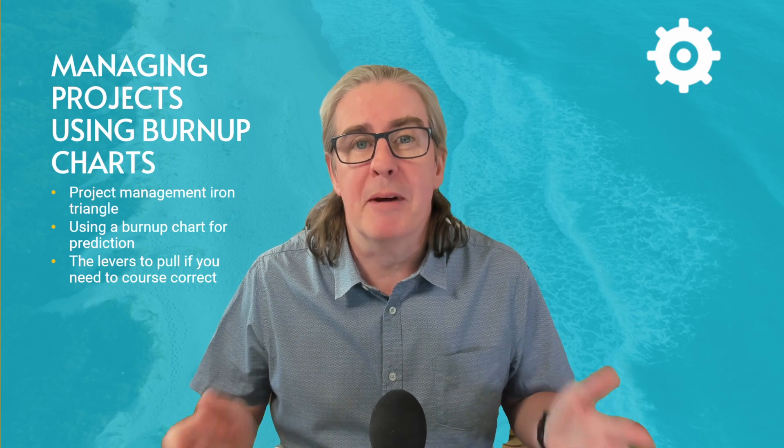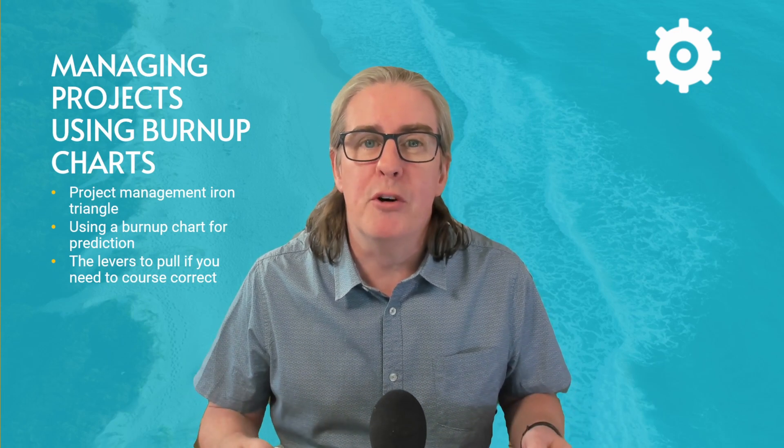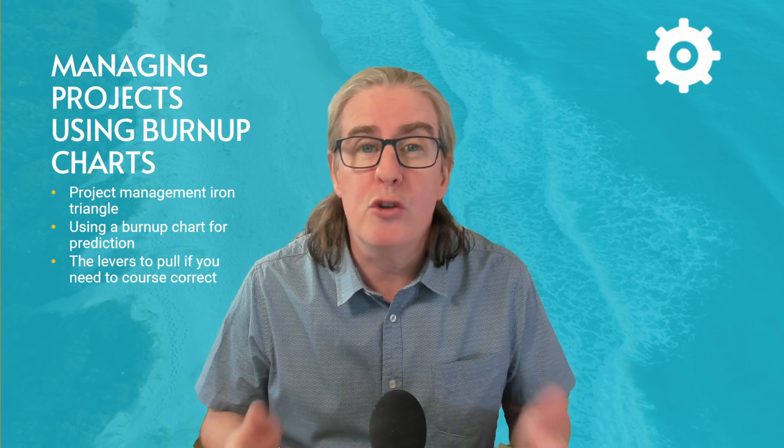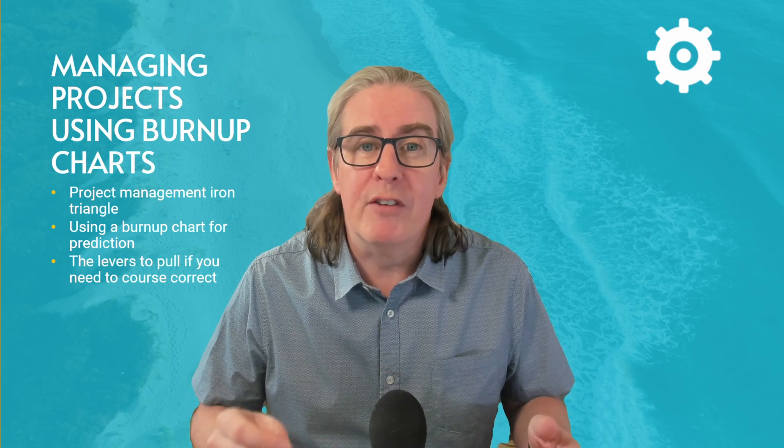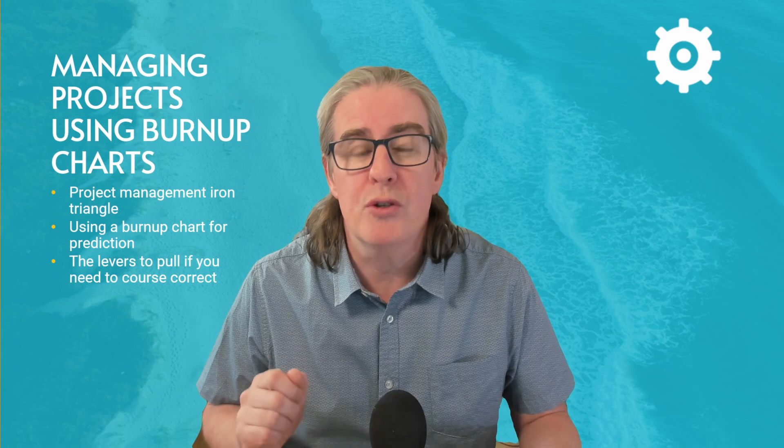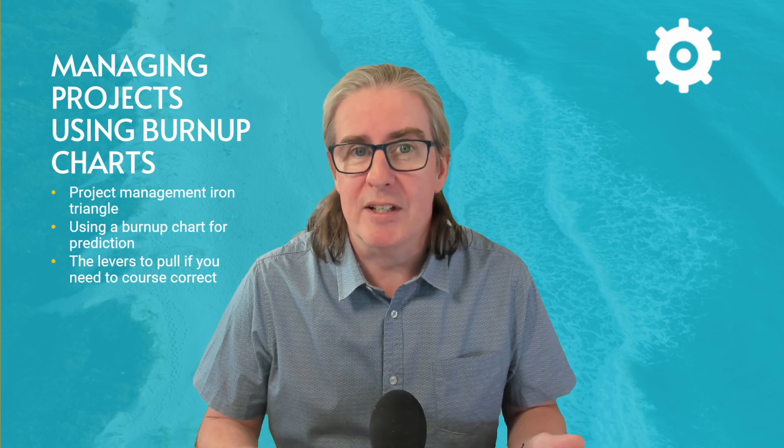First off we're going to be looking at the project management tool which is called the Iron Triangle and then using those data points we're going to take them into what's called a burn-up chart and show you how you can use that in order to be able to do predictions. Then we'll have a quick look at what happens when things go wrong and how you can maybe use the project burn-up chart in order to do course correction. So let's dive in.